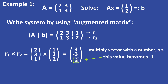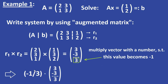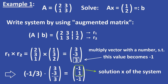Now we have to take a look at the last value. We have to multiply this vector with a number such that this value becomes minus 1. In our case we have to multiply the vector with minus one third. Now this value is equal to minus 1, and the vector above the dashed line is the solution of the system — this vector in R2 is the solution x.